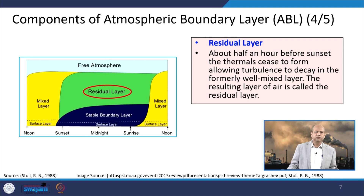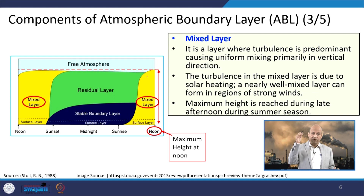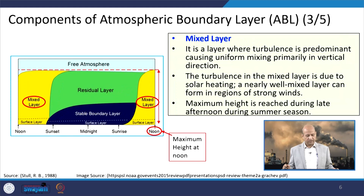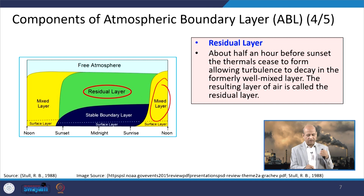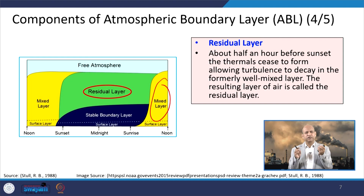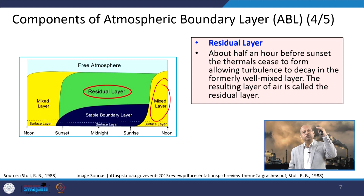The residual layer is the upper part of what was the mixed layer. About half an hour before sunset, thermals cease to exist and turbulence decays in the formerly well-mixed layer. The well-mixed layer reduces into two parts: the stable boundary layer and the residual layer above it, where stability classification concepts apply.